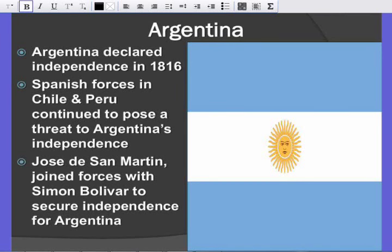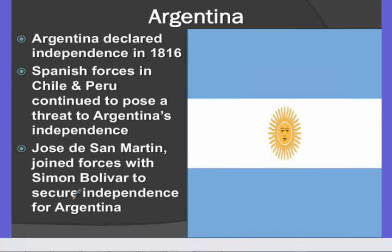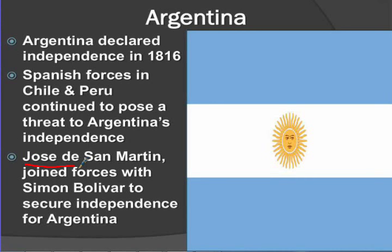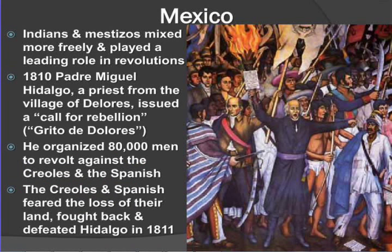Moving on to Argentina. Argentina declares independence in 1816. Spanish forces in Chile and Peru continue to pose a threat, but Jose de San Martín is going to join forces with Simon Bolivar to secure independence for Argentina. Bolivar had a hand in a lot of different countries and is a big hero for many people — he helped gain independence for Venezuela and other countries in South America.